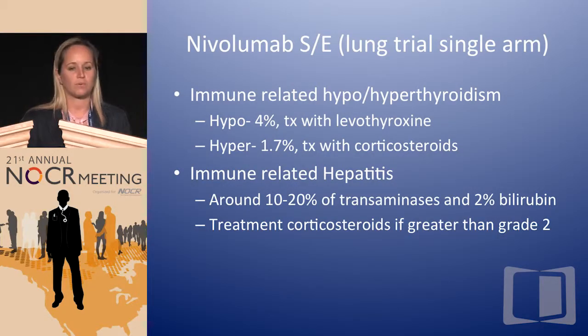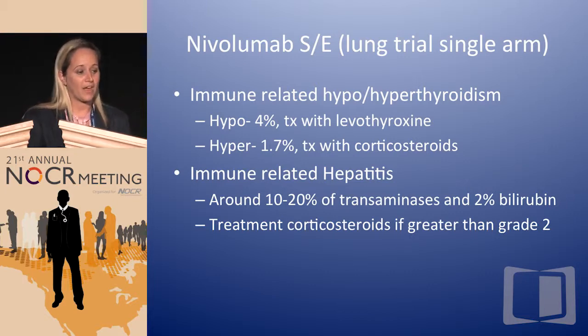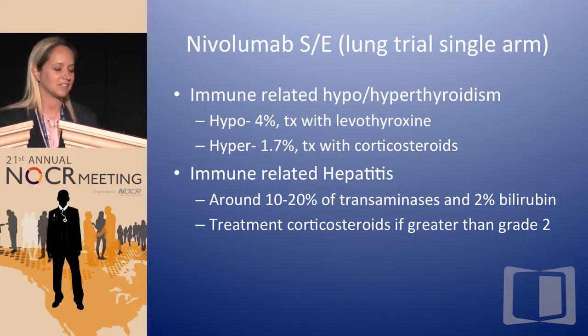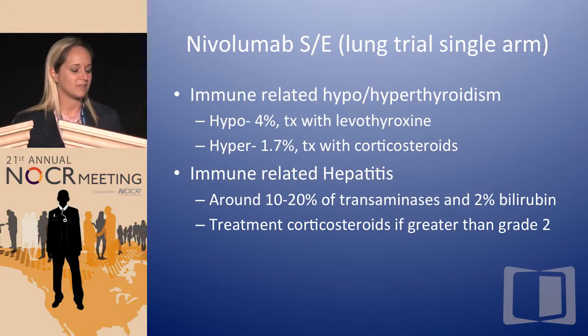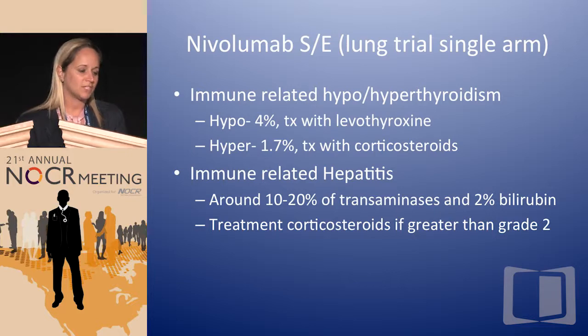Immune-related hypothyroidism occurs in about 4% of patients — notably, the treatment is levothyroxine, the only toxicity where corticosteroids are not the treatment. For hyperthyroidism, corticosteroids are used. Immune-related hepatitis shows about 10-20% elevation in transaminases and about 2% elevation in bilirubin — mostly not grade 3 or 4. Treatment is corticosteroids if greater than grade 2, but that was very rare. Most of these are only grade 1 or 2, which we generally treat through.